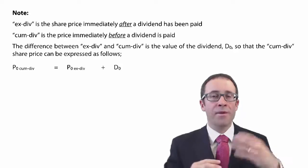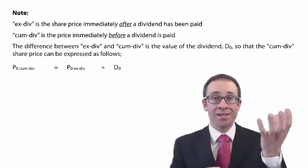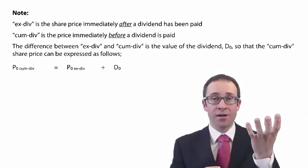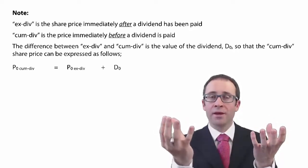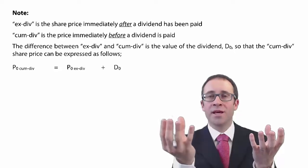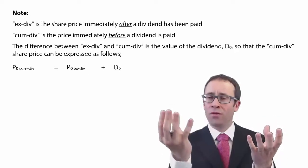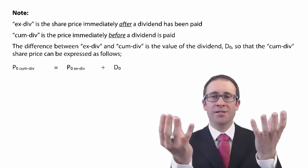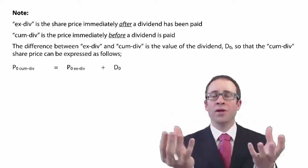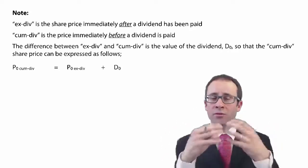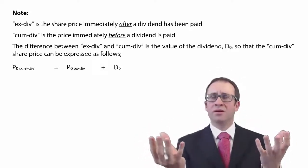Now, if the company then pays out that dividend, what I now have is a $0.10 dividend in one hand and the share in the other. If the share price stayed at $1.10, then I'd have a $1.10 share price plus a $0.10 dividend, which means I'm wealthy to the tune of $1.20. And all of a sudden, out of nowhere, an additional $0.10 has appeared.